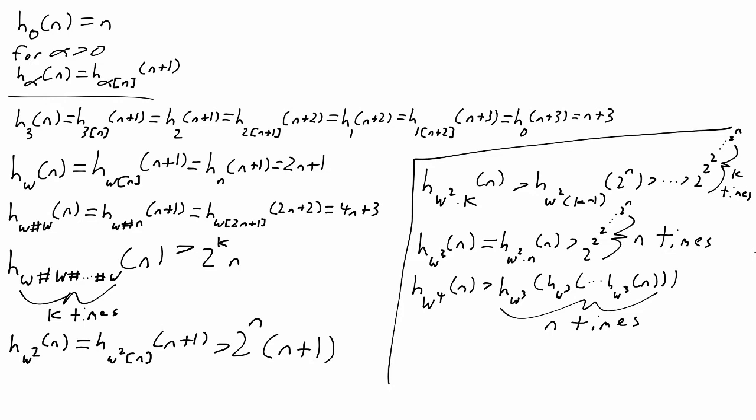So h_omega is multiplying by 2, h_{omega squared} iterates multiplying by 2, which is an exponential. h_{omega cubed} is the iteration of that, the tower exponential. And above all of these is h_{omega to the omega}, which is repeating the iteration process n times. So the bigger n is, the more we iterate. And this is roughly what's called the Ackermann function.